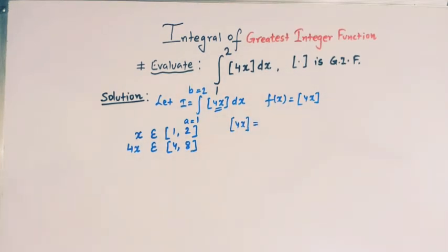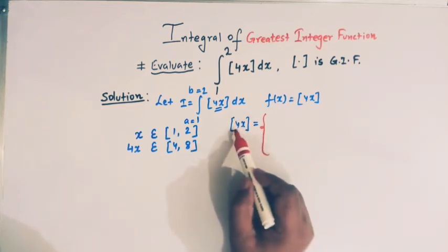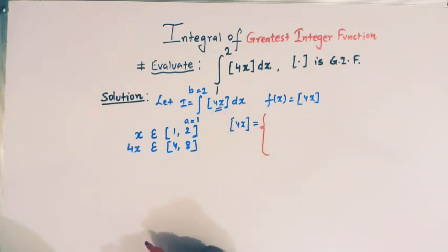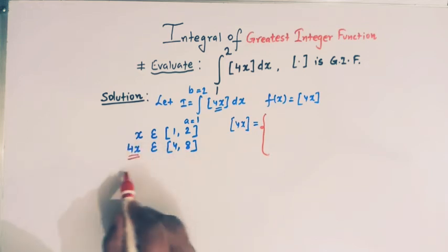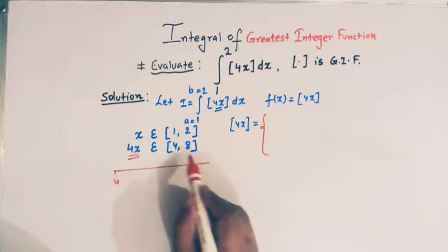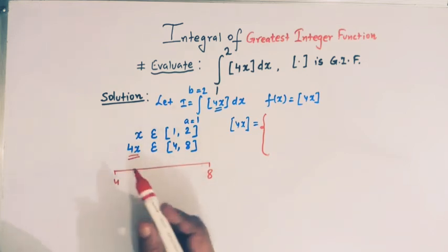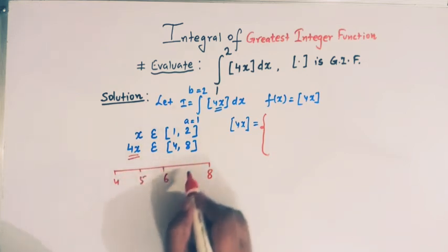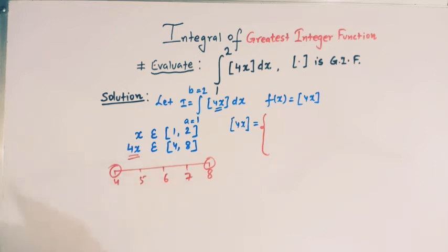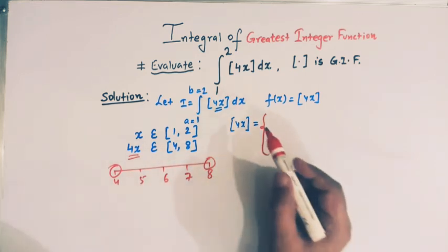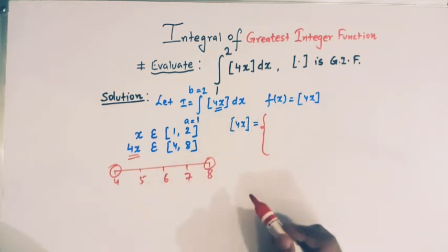Now let us write the greatest integer function [4x] in terms of intervals. We will express this greatest integer function [4x] as a piecewise function. We see that 4x belongs to the interval [4, 8], and between 4 and 8 the integer values are 5, 6, and 7. So let us express [4x] as a piecewise function accordingly.